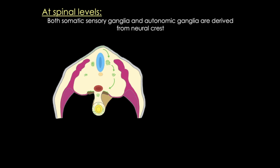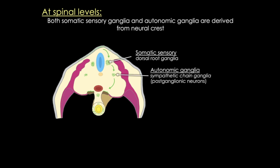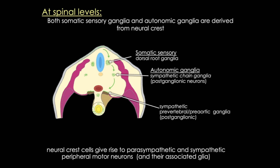At spinal levels, the crest gives rise to the sensory ganglia — the dorsal root ganglia — sympathetic chain ganglia, and the prevertebral preaortic ganglia. In addition, crest cells give rise to all parasympathetic and sympathetic motor neurons and all of their glia.